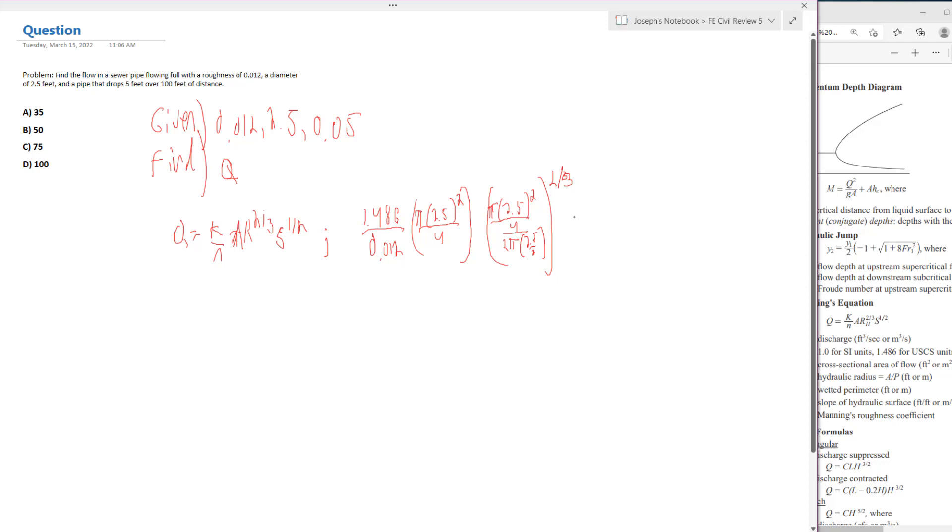And then the slope, which we determined was 0.05, we raised to the 1 half power. So this is our equation. This is how we're going to be able to find the flow in this pipe. Now, you notice that some terms can cancel out here.